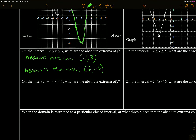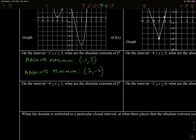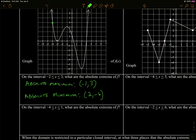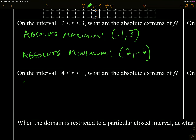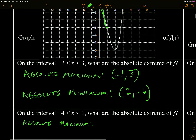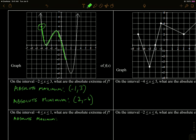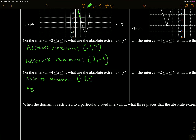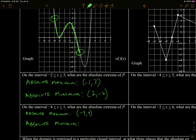Now let's look on a different interval, negative four to one. If we change the interval, because it's closed, this may change what our extreme values are. So from negative four to one, we might change our absolute maximum and minimum. The absolute max is actually going to be at one of the endpoints — this point at negative four, four. And the absolute minimum is going to occur at the other endpoint, one, negative three.